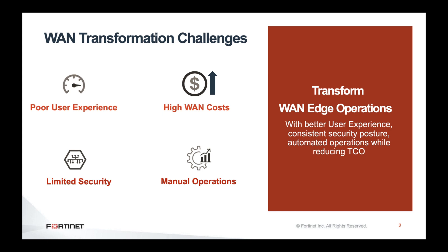If we look at enterprises today, branches are typically connected using MPLS connectivity. The problem with MPLS is that it is a very high-cost connection. If you need to increase bandwidth, you need to increase costs — and in the current environment, every company is looking to decrease costs rather than increase expenses. So paying more for MPLS is not acceptable for most customers.